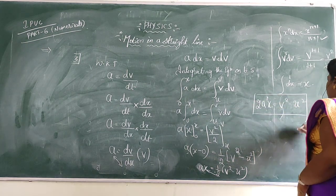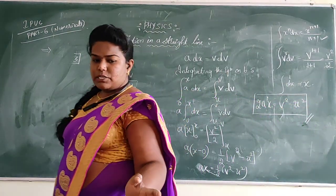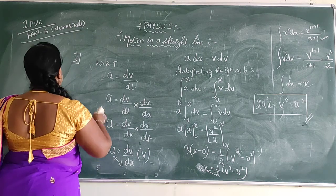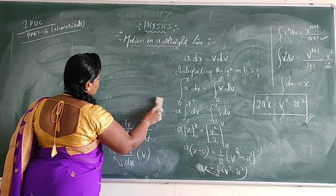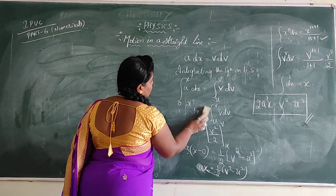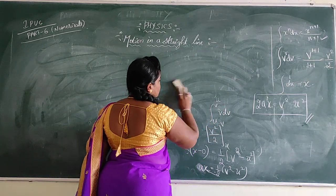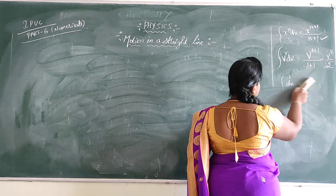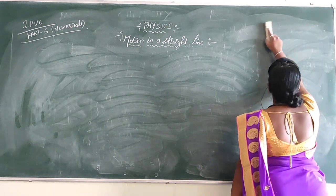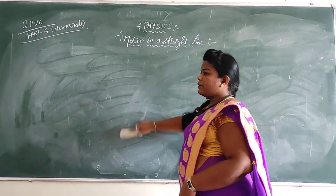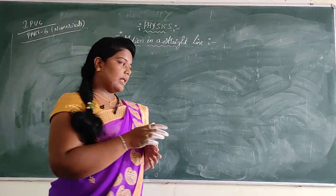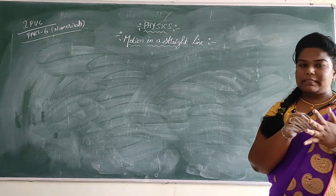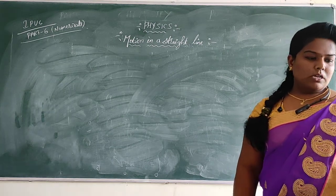Dear students, finally remember the third equation of motion. So just by using the calculus method, we deduced the three equations of motion: first is V equals U plus AT, second is S equals UT plus half AT square, and the third equation is 2AS equals V square minus U square. Hope you all enjoyed the class. Maintain your notes very clearly, so that when you come to class we are going to check it. I am going to post the PDF notes for this chapter, so just copy the notes in your notebook. Thank you, my dear students.